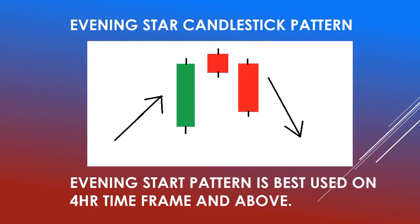The evening star pattern is best used on the 4-hour time frame and above. This means you can use it on higher time frames such as the 4-hour, daily, weekly, and monthly. When you see the formation of an evening star candlestick pattern at the top of a bullish trend on these time frames, be rest assured that a bearish trend will develop sooner or later.